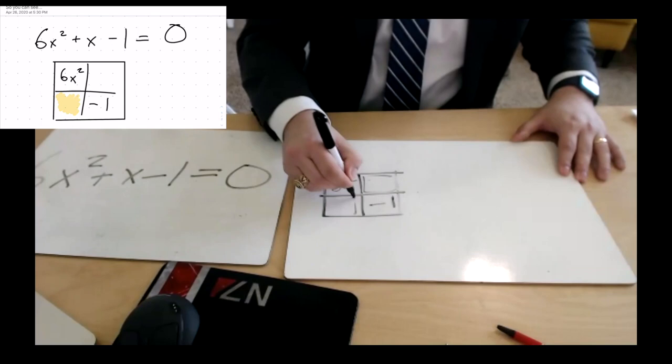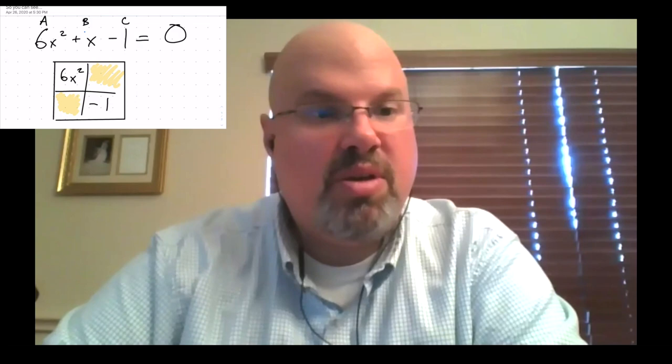Now we're going to try to find the peanuts — what goes in the middle, like these two boxes. Looking at the original equation, let's identify our a, b, and c values. They go alphabetically. For our b, we don't have any number there. What's our b value? Your b value is going to be 1. I'll go ahead and put that in front of the x just to clean it up a bit.